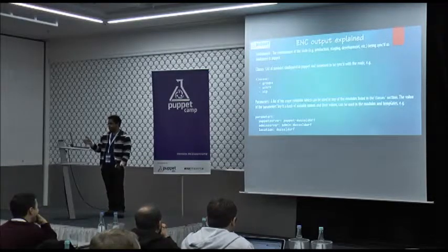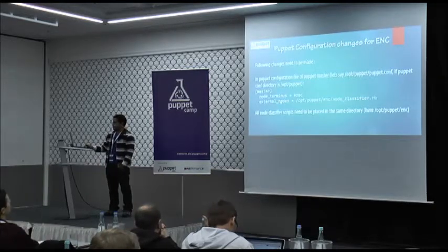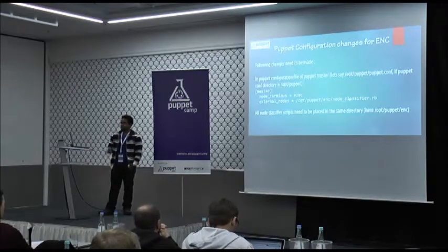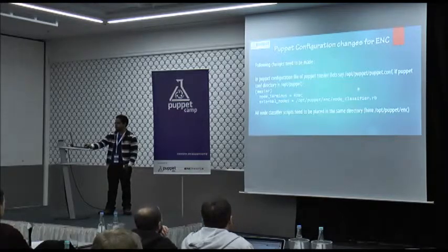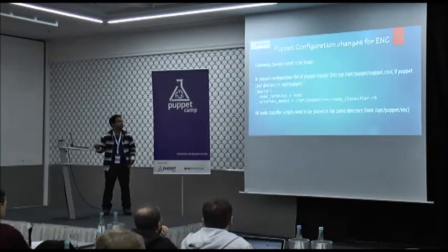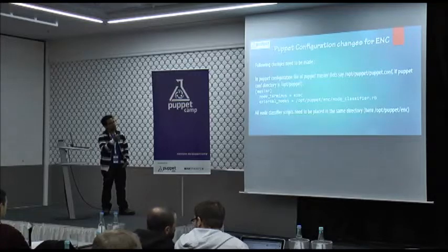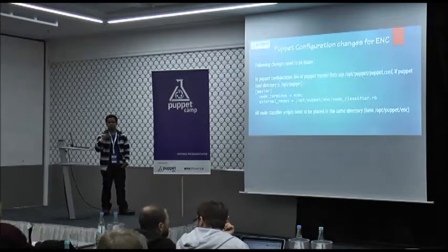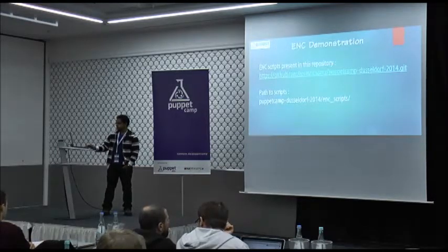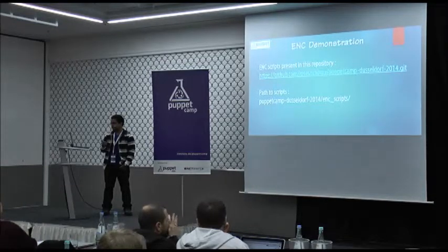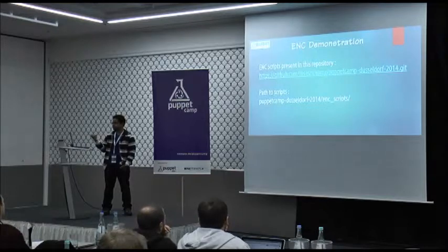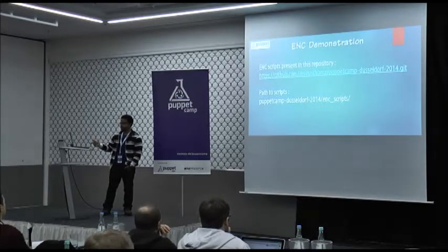What are the Puppet changes needed to implement ENC in your infrastructure? The only thing you need to do is in your main puppet.conf file, under the master section, specify just these two parameters. You have to mention that node_terminus would be exec, and the external_nodes parameter should point to your primary script which actually does all your manipulations. I have this in my GitHub repository - the presentation will be there in Puppet Labs, you can fetch the scripts from there and try this out.